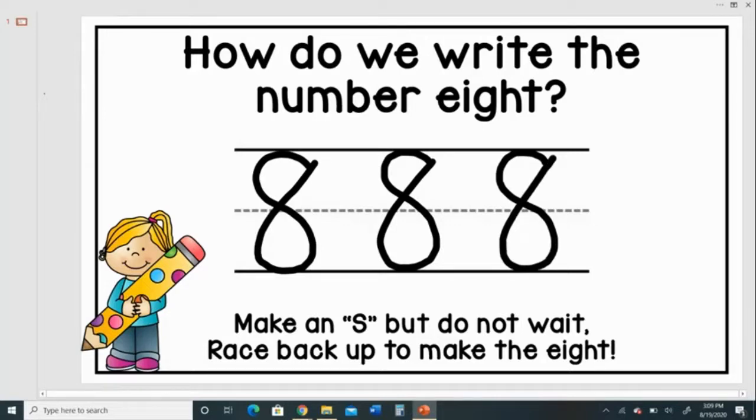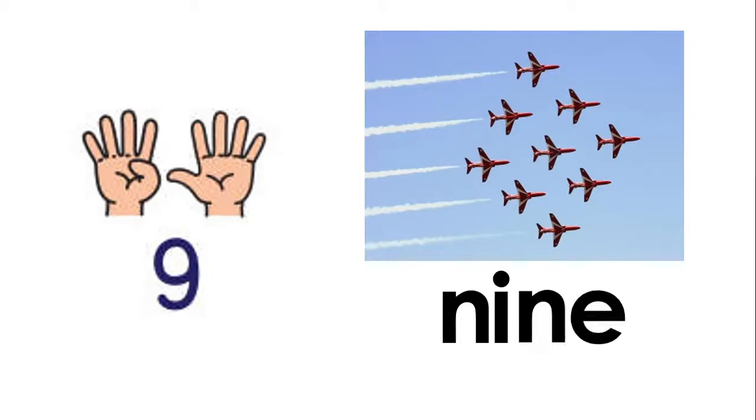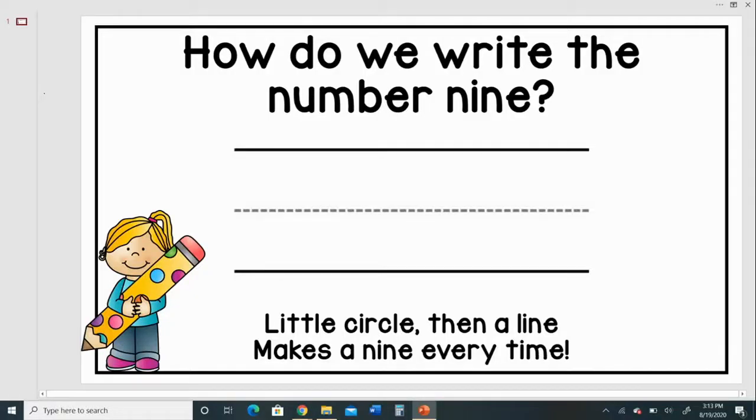And after the number 8 comes the number 9 and we have 9 jets here, so we have 6 jets and then we have 9 jets. Now let's spell the number 9. N I N E 9. One more time. N I N E 9. How do we write the number 9?